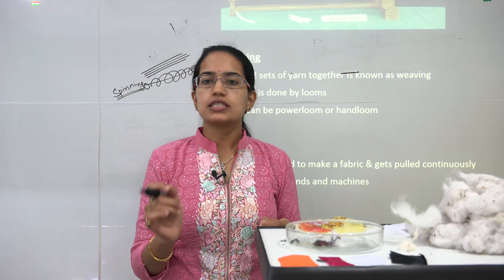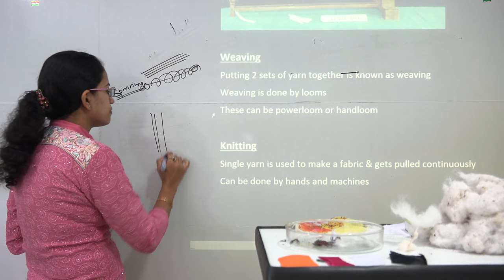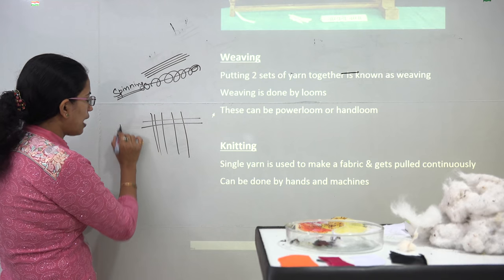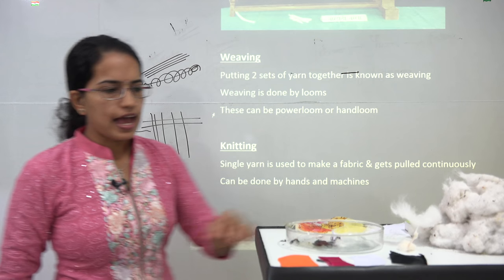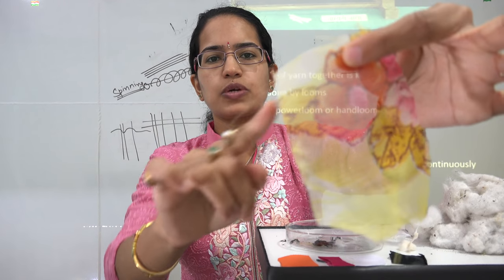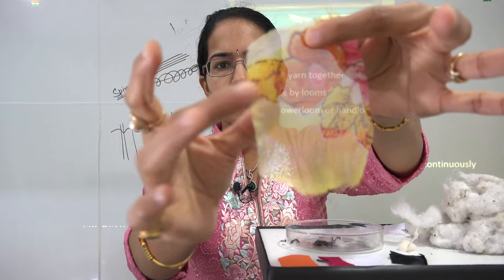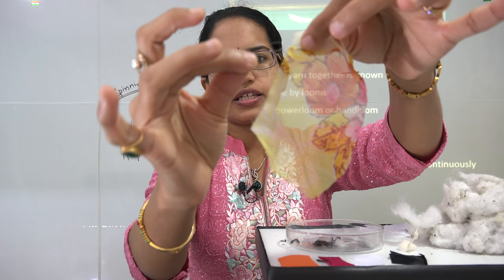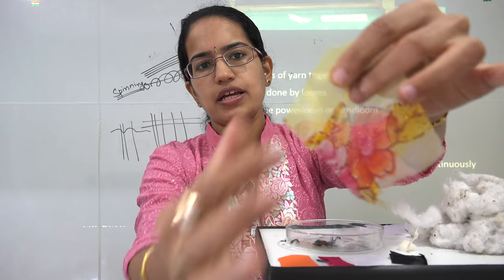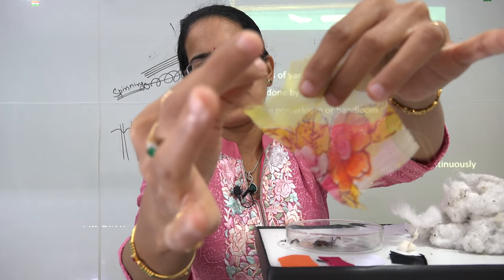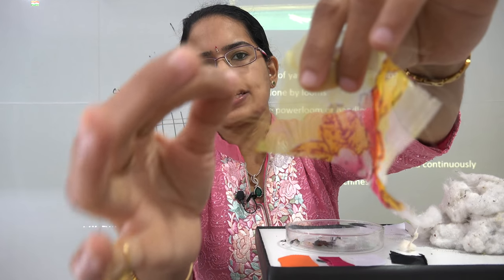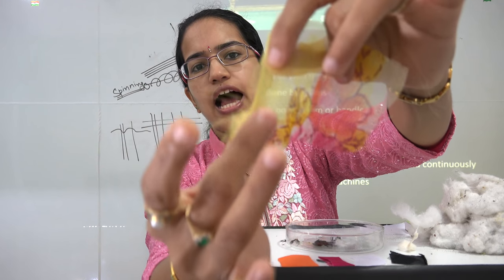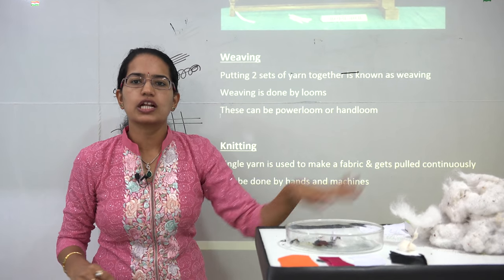Once spinning is done, the next process is weaving. Under weaving, the cloth is inter-knitted: one series of threads goes horizontally while another goes vertically, up and down. If I take a piece of cloth, you can see small lines running horizontally and parallel vertical lines. When I pull a thread, you can see how these separate out, showing the individual yarn strands — the vertical and horizontal ones running through each other.